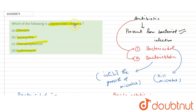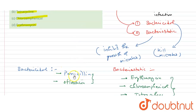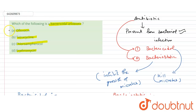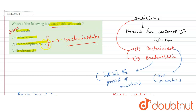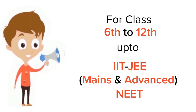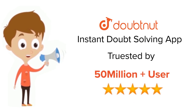The question asks for a bactericidal antibiotic. The two bactericidal antibiotics we identified are penicillin and ofloxacin. Therefore, option A (ofloxacin) is the correct answer. Options B, C, and D — tetracycline, chloramphenicol, and erythromycin — are all bacteriostatic and inhibit the growth of microbes, so they are wrong. For class 6–12, IIT JEE, and NEET level, trusted by more than 5 crore students — download the DoubtNet app today.